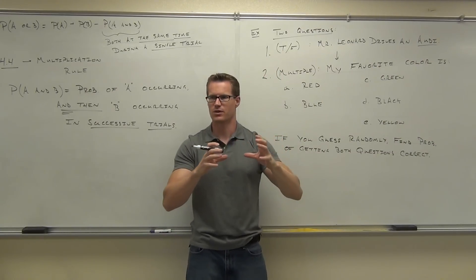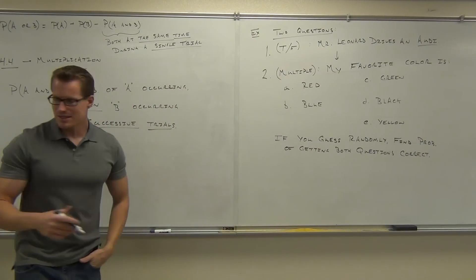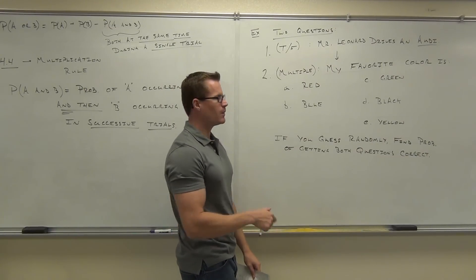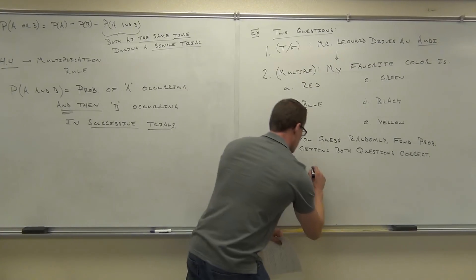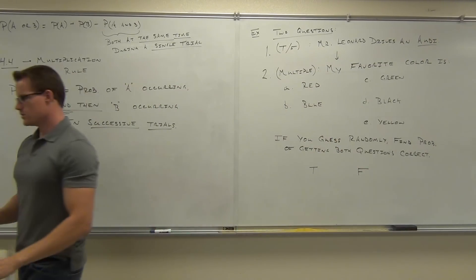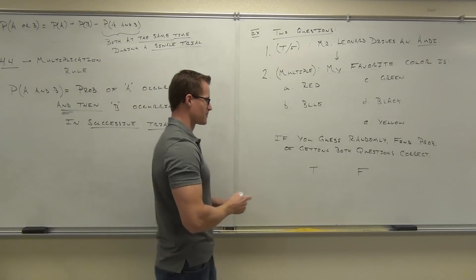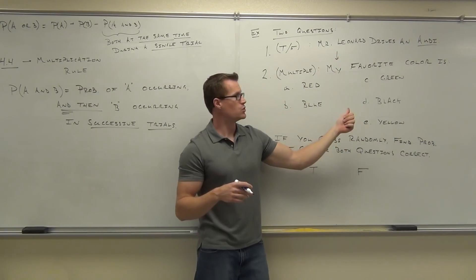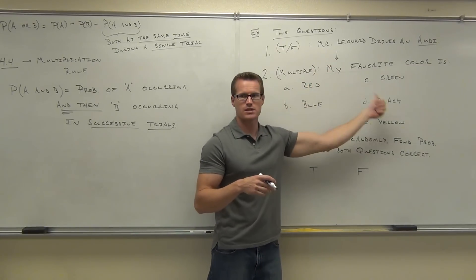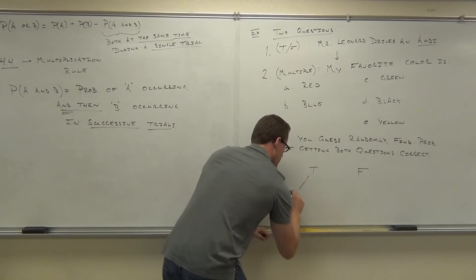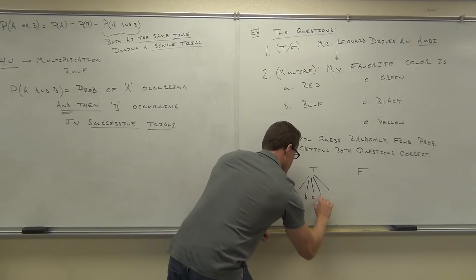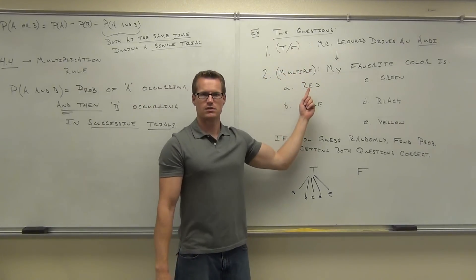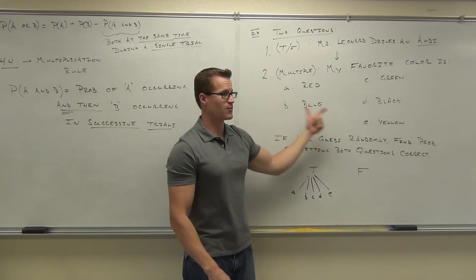What needs to happen for us to get both answers right? You've got to answer the first one right and then the second one right. For question one, you could do either true or false — two choices. If you pick true, you could then pick A, B, C, D, or E for question two. That gives you five choices for true, and if you choose false, you again have five choices A through E — same five choices for false as well.